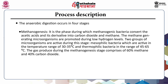The last stage in anaerobic digestion is methanogenesis, where methanogenic bacteria convert acetic acids and derivatives into carbon dioxide and methane. Methane-generating microorganisms are promoted during low hydrogen levels. Two groups of microorganisms are active during this stage: mesophilic bacteria, active in the temperature range of 30 to 35 degrees Celsius, and thermophilic bacteria, operating in the range of 45 to 65 degrees Celsius. Gas production during methanogenesis comprises 60% methane and 40% carbon dioxide.